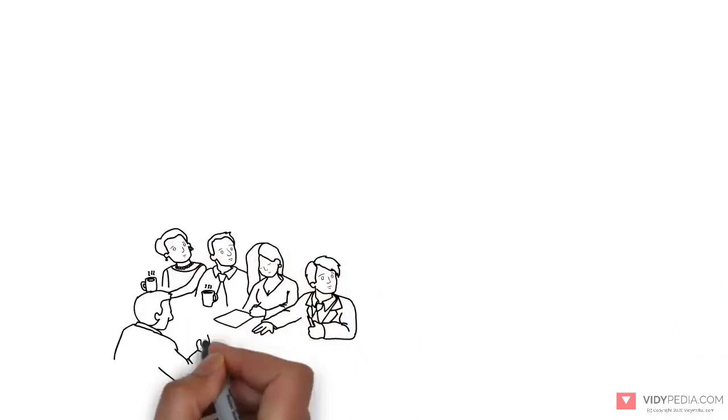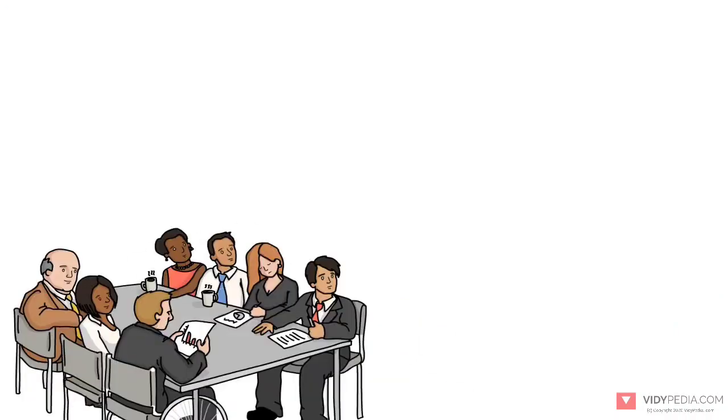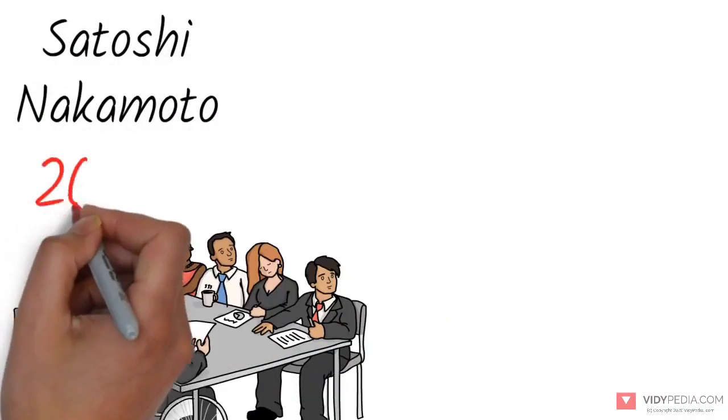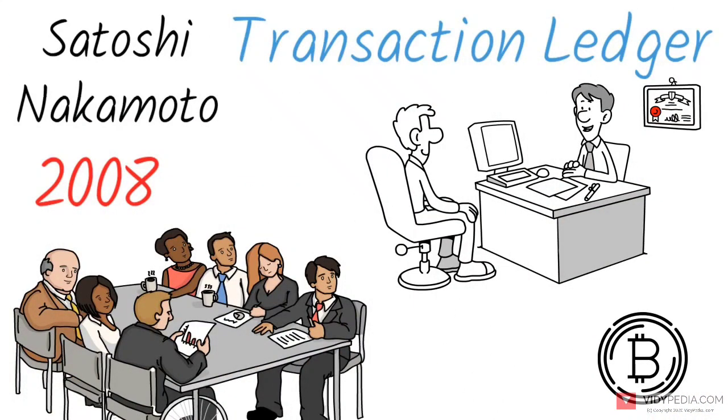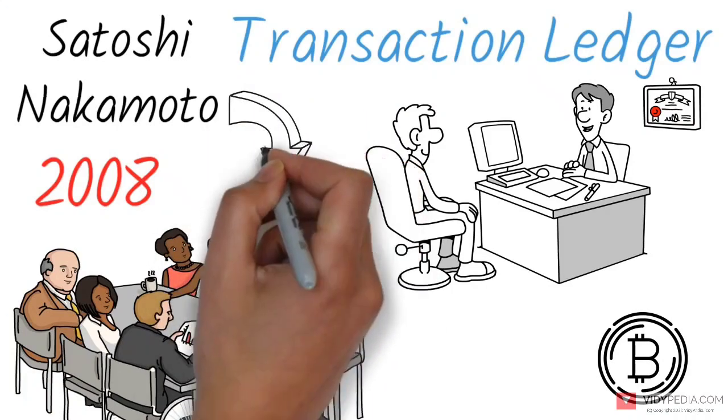Blockchain was invented by a person or a group of people using the name Satoshi Nakamoto in 2008 to serve as the public transaction ledger of the cryptocurrency Bitcoin. The identity of Satoshi Nakamoto is unknown.